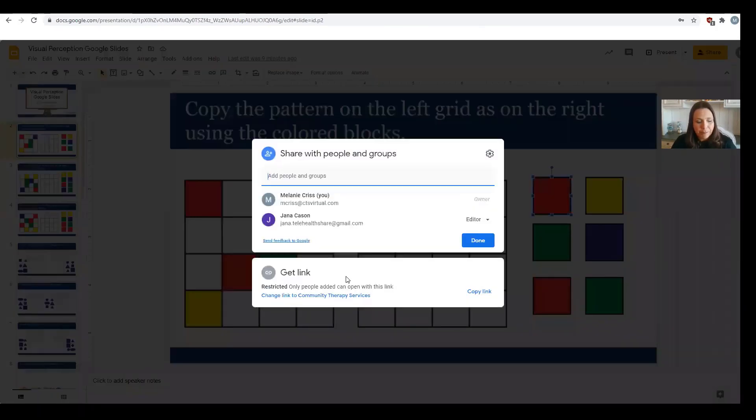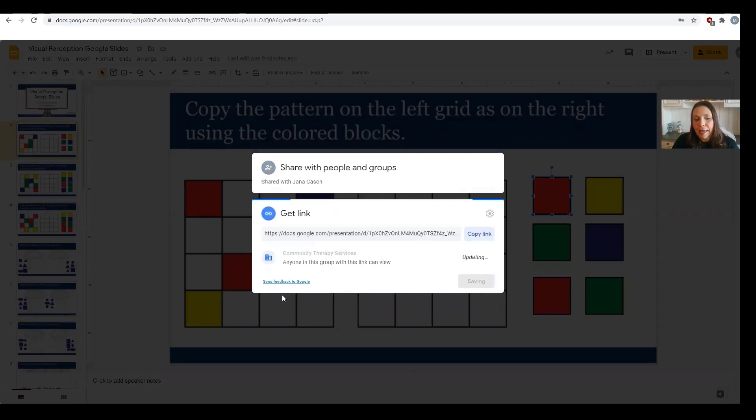Once you click the Share button, then you want to go down here to the area where it says Get Link, and there will be something where it says Change, something where it's hyperlinked right here. So you want to click that, and then you want to change this.